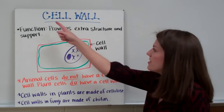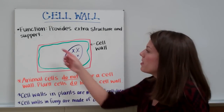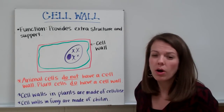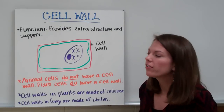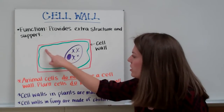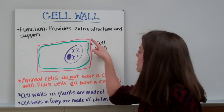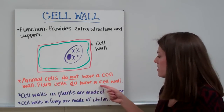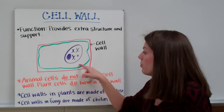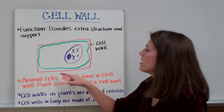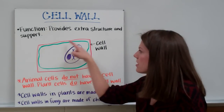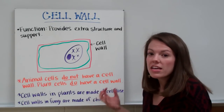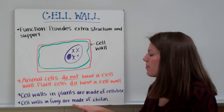The next organelle is the cell wall. Not all cells have a cell wall, but its function is to provide extra structure and support — like the brick wall of a school. Outside the cell membrane is the cell wall. Animal cells do not have a cell wall, but plant cells do. Cell walls in plants are made of the sugar cellulose, and cell walls in fungi are made of chitin.